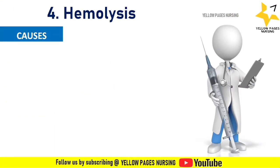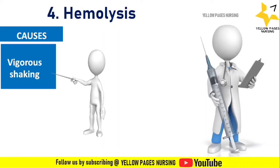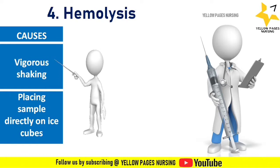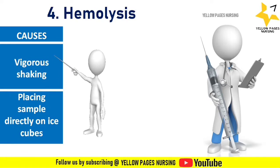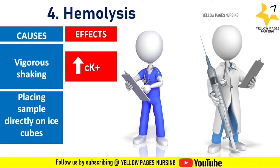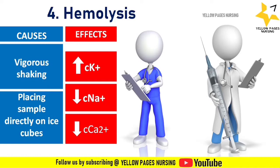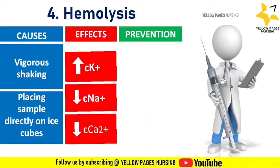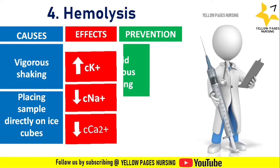Next is hemolysis of the sample. After collecting the sample, vigorous or intense shaking may cause hemolysis. Placing samples directly on ice cubes may also cause hemolysis. The effects include increase in potassium level, decrease in sodium, and decrease in calcium. To prevent this, avoid vigorous shaking and do not place samples directly on ice.